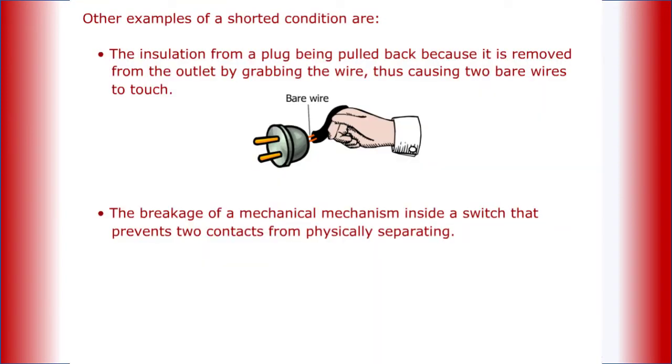Other examples of a shorted condition are: insulation from a plug being pulled back when removed from the outlet by grabbing the wire, causing two bare wires to touch, and the breakage of a mechanical mechanism inside a switch that prevents two contacts from physically separating.